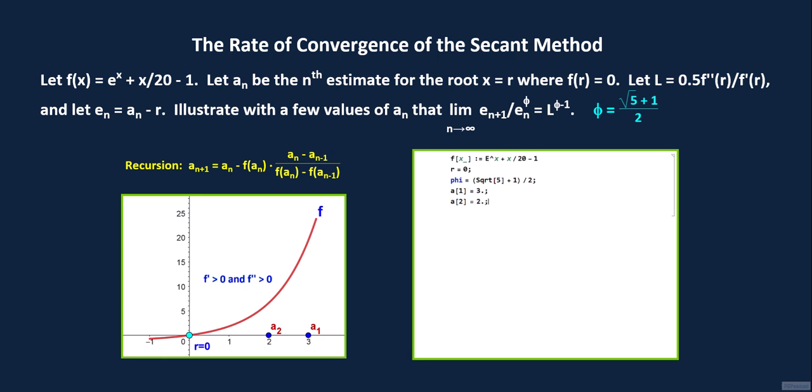Now, for the recursion. We use a do loop. a sub n plus 1 equals a sub n minus f of a sub n times the quantity a sub n minus a sub n minus 1 divided by the quantity f of a sub n minus f of a sub n minus 1. The lowest subscript in the recursion is n minus 1. The starting index for the a sub n is 1. And so, if we set n minus 1 equals 1, n must start at 2.